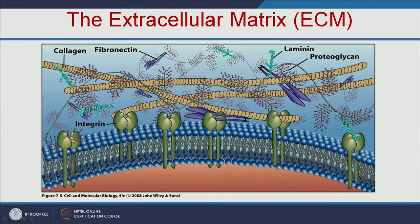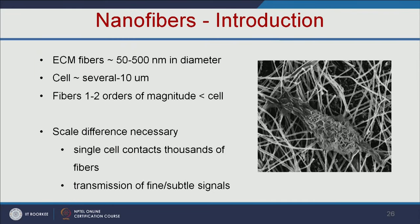You can see the extracellular matrix — each tissue or organ has this kind of ECM, on top of which all cells attach, grow, and form the tissue or organ. When you use a nanofiber-based scaffold, it exactly mimics the extracellular matrix. The extracellular fiber matrix is in the range of 50 to 500 nanometer diameter, while cell size is between 10 to 100 micrometer.